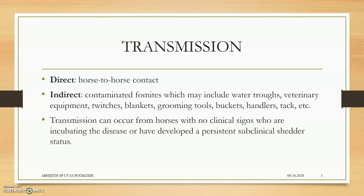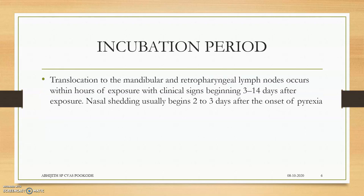Susceptible animals include horses, ponies, camels, and donkeys. Transmission is through direct horse-to-horse contact — nasal discharges, saliva, etc. can spread infection. Indirectly, it is a contagious disease and you can get it from contaminated buckets, grooming tools, blankets, handles, tracks, and veterinary equipment.